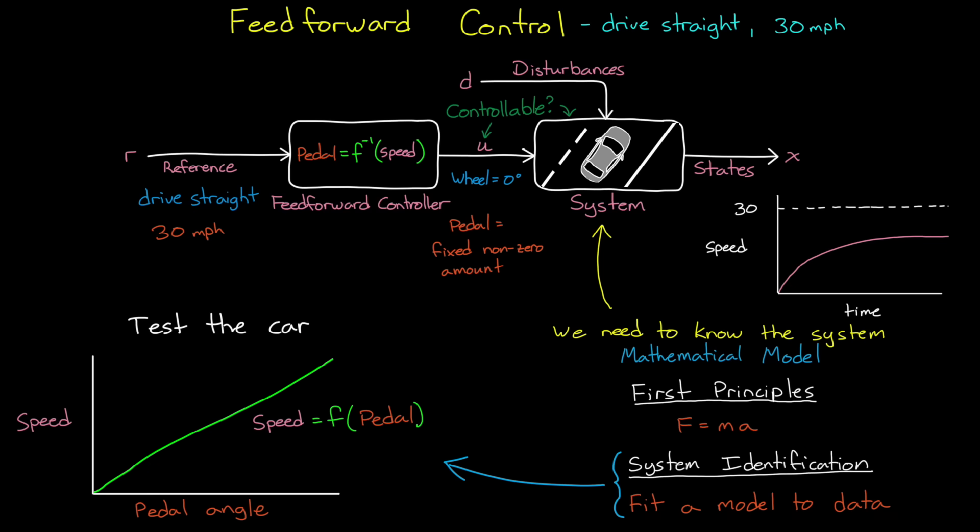So, feed-forward controllers are a pretty straightforward way to control a system. However, as we can see, it requires a really good understanding of the system dynamics, since you have to invert them in the controller. And any error in that inversion process will result in error in the system state.